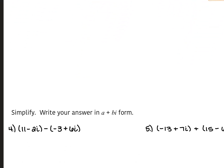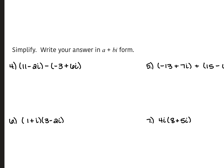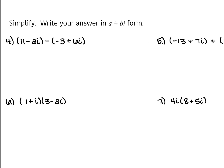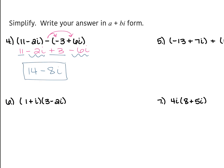For your next section, it tells you to simplify and write your answer in a plus bi form. So with number 4, we have 11 minus 2i minus negative 3 plus 6i. We have subtraction between these two parentheses, so we're distributing that negative in and then combining like terms. That's going to give us 11 minus 2i plus 3 minus 6i. Combining constants: 11 plus 3 gives us 14. Then the i terms: negative 2i and negative 6i combine to give us negative 8i. So our answer is 14 minus 8i.